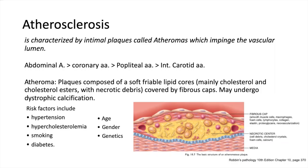Next we have atherosclerosis, characterized by intimal plaques called atheromas which impinge on the vascular lumen, disrupting hemodynamics. These atheromas are plaques composed of soft, friable lipid cores mainly consisting of cholesterol and their esters, along with some necrotic debris, all covered by a fibrous cap. Risk factors can be divided into modifiable — hypertension, hypercholesterolemia, smoking, and diabetes — and non-modifiable — age, gender, and genetics.